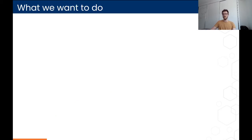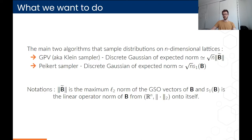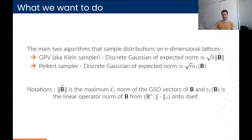There are already lattice samplers, the two main ones being GPV also known as Klein sampler, and the second one being Peikert sampler. Both of these algorithms sample from the discrete Gaussian distribution with an expected norm of the output being about root n times some value that represents the length of the basis used.